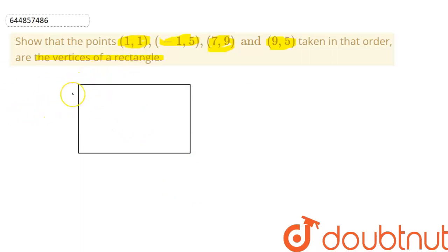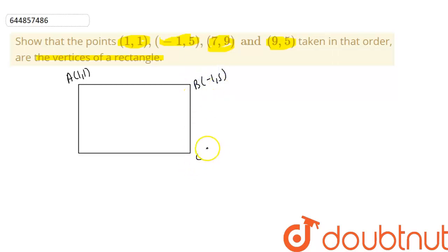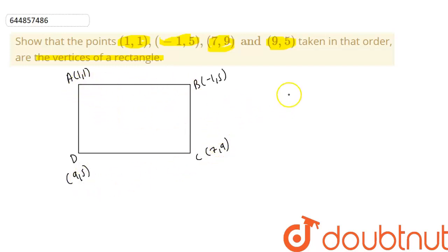Let us name these points. The point (1,1) is point A. At B we have (-1,5), at C we have (7,9), and at D we have (9,5).